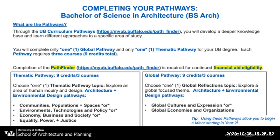First, I want to go over the thematic pathway. For students in the Bachelor of Science in Architecture, there are four thematic pathways built off of your requirements for the degree. Those four pathways include: Communities, Populations and Spaces; Environment, Technology and Policy; Economy, Business and Society; or Equality, Power and Justice. Any one of those four thematic pathways builds on courses you must take as part of the Bachelor of Science in Architecture degree requirements.